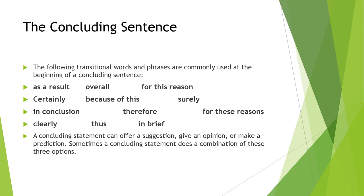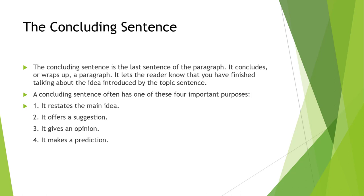A concluding statement can offer a suggestion, give an opinion, or make a prediction. Sometimes a concluding statement does a combination of these three options. The concluding sentence is the last sentence of the paragraph — it lets the reader know that you have finished talking about the idea introduced by the topic sentence. A concluding sentence often has one of four important purposes: it restates the main idea, it offers a suggestion, it gives an opinion, or it makes a prediction.